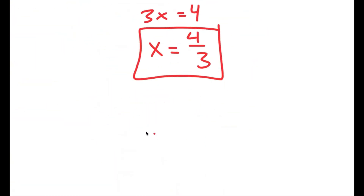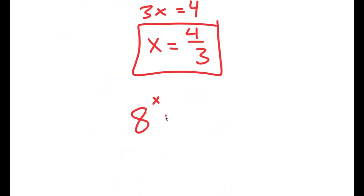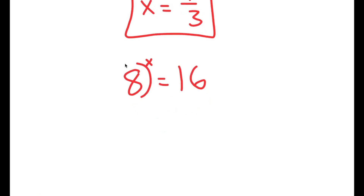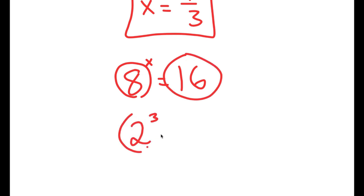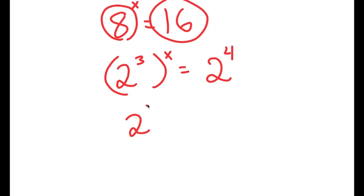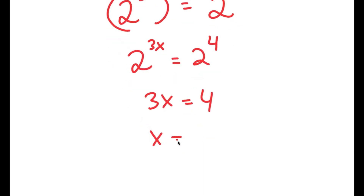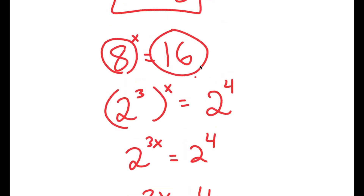There is actually another way to solve this problem. At the start, I can rewrite both sides in base 2. So 8 equals 2 to the power of 3, giving 2 to the power of 3 to the power of x, and 16 equals 2 to the power of 4. This simplifies to 2 to the power of 3x equals 2 to the power of 4, meaning 3x equals 4, so x equals 4 over 3. This is a much simpler method.